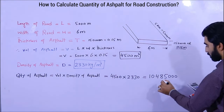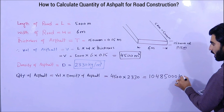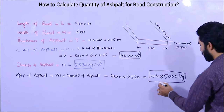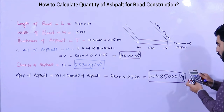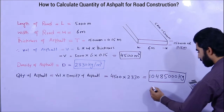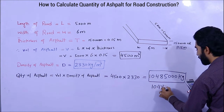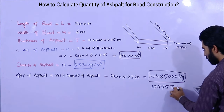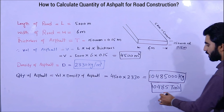So here you can see these are kilograms. Let me convert it to tons — when you divide by 1000, we require 10,485 tons of asphalt.